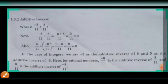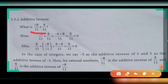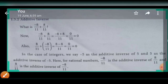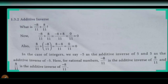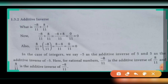Let us see one example. What is minus 8 by 11 plus 8 by 11? The denominators are the same, so add or subtract the numerators: minus 8 plus 8 equals 0, and 0 by 11 is simply 0. Using the commutative property, 8 by 11 plus minus 8 by 11 also gives 8 minus 8 over 11, which is 0. So the additive inverse of minus 8 by 11 is 8 by 11, and the additive inverse of 8 by 11 is minus 8 by 11.